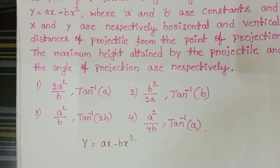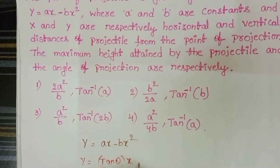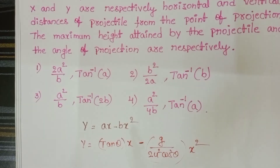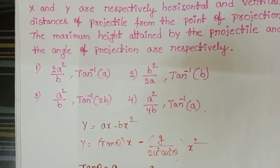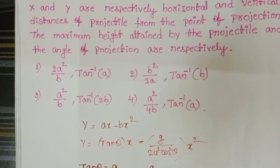We know the standard equation of projectile: y = tanθ · x − (g / 2u²cos²θ) · x². Comparing the given equation with the standard equation of projectile, we get: tanθ = a, and g / (2u²cos²θ) = b.